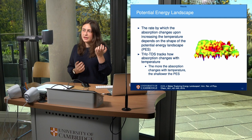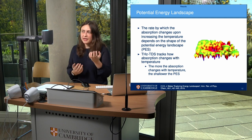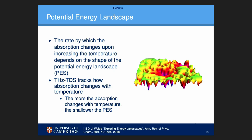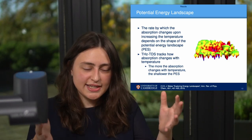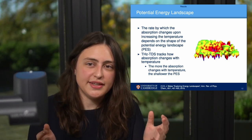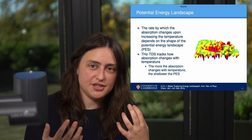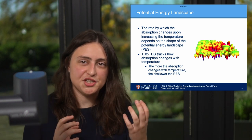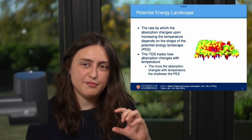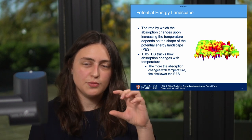We can relate the shape of the potential energy landscape to the rate of absorption change with temperature. The more the absorption changes with temperature, the more states become available, and that means the potential energy landscape must be very shallow.